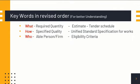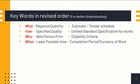Then comes 'able person or firm,' referred to as eligibility criteria. This answers the basic question: who will do the work? Then comes 'least possible time' — the time required for completion of the works mentioned in the contract. We refer to it as the completion period or currency of work.